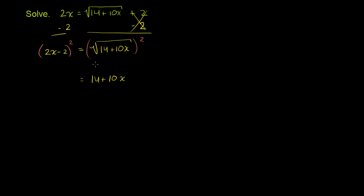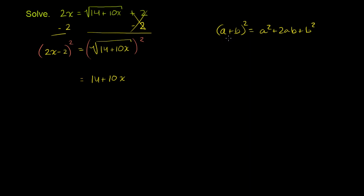The best way to handle this is to square, solve, and then check which answers work by substituting back into the original equation. On the left-hand side, we use the identity (a + b)² = a² + 2ab + b². You can use the distributive property or FOIL, but it's good to recognize this special case of squaring a binomial.